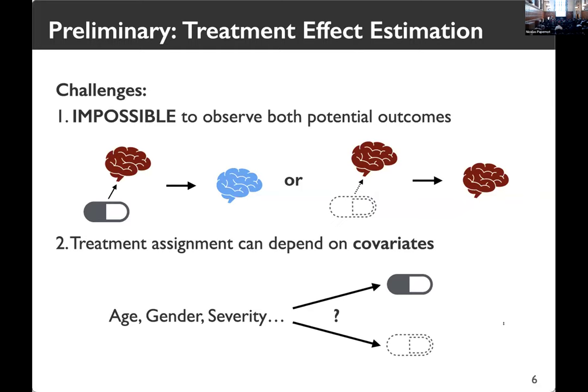However, this does not address the second challenge, which arises when the data is from observational studies. That is, whether you take a drug depends on what are called covariates — for example, the severity of the disease or age. Patients with more severe symptoms would be more likely to be administered some sort of drug. So the people who take the drug are different from those who do not, and we need to take this into account when estimating ATE.